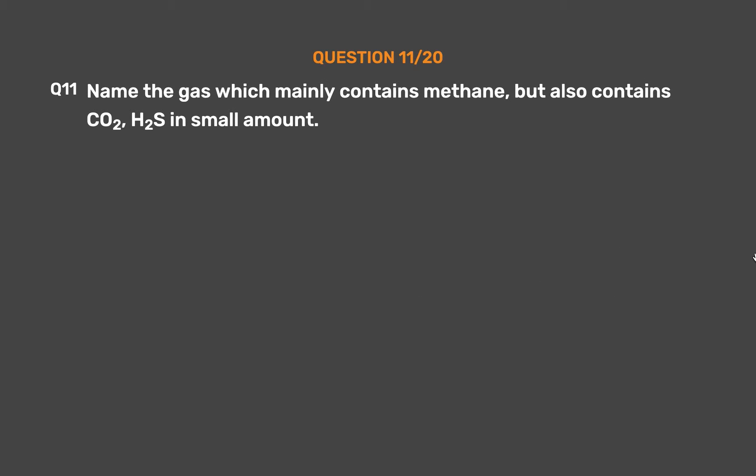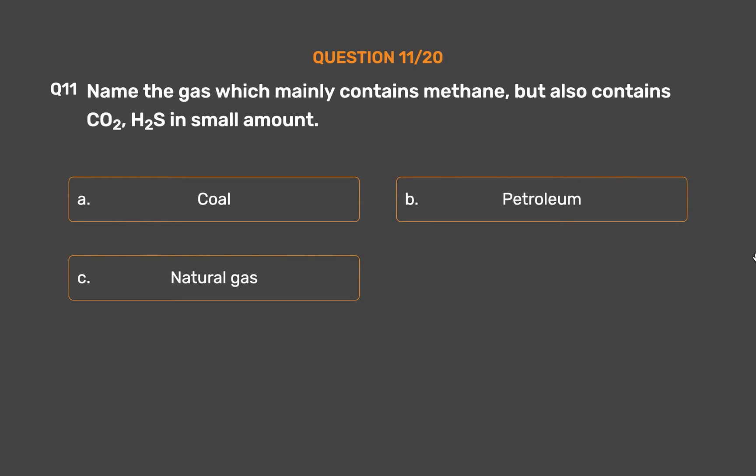Question number 11: Name the gas which mainly contains methane, but also contains CO2 and H2S in small amounts. Option A: Coal. Option B: Petroleum. Option C: Natural gas. Option D: None of these.